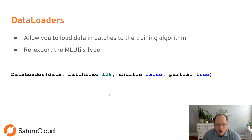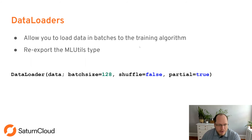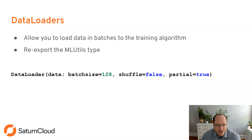The first key concept is a data loader, which allows you to load data in batches to the training algorithm. This is an MLUtils type re-exported into Flux. You just give it your data, tell it the batch size, whether to shuffle or not, and whether to give partial amounts at the end if your data doesn't divide evenly by batch size. Simple but very useful for loading data in batches.